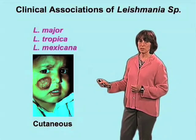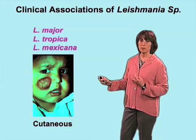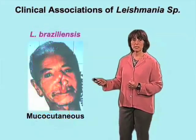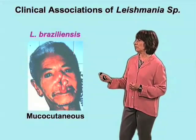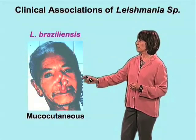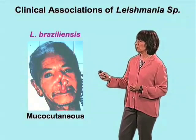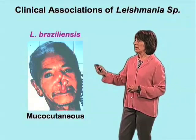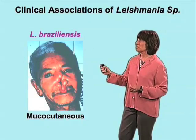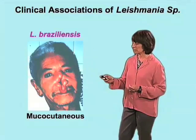The cutaneous form can be very disfiguring, although these lesions most of the time are self-healing. There is a more serious form of this cutaneous disease, which is the form that attacks the mucosal membranes, and this can really be seriously disfiguring. This is usually associated with some species, for example Leishmania brasiliensis.